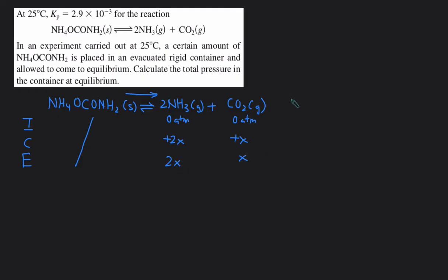Then we can set up the Kp expression. So Kp equals the pressure of NH3 squared times the pressure of CO2. There's nothing on the bottom because the reactants are solid, and solid liquids do not go into the equilibrium expression. Now substitute the values in. The Kp is 2.9 times 10 to negative 3. NH3 is 2x, and then CO2 is x.